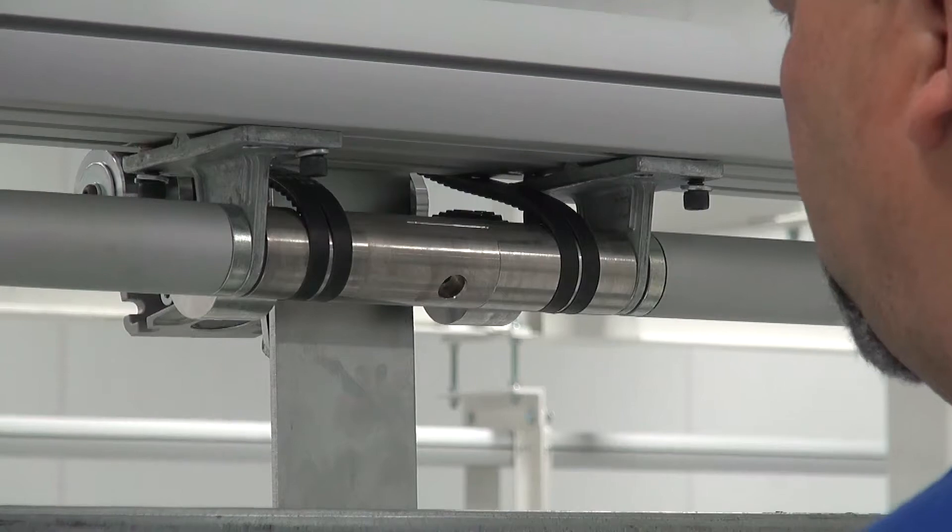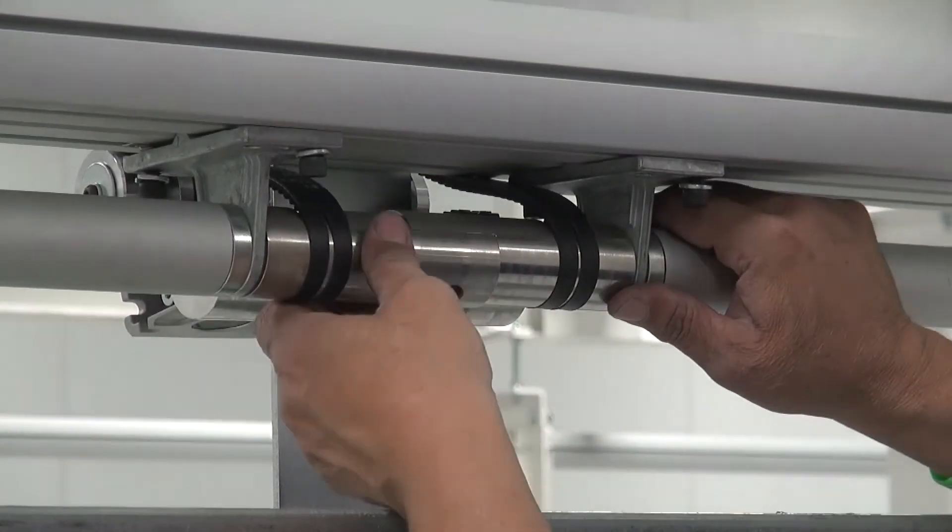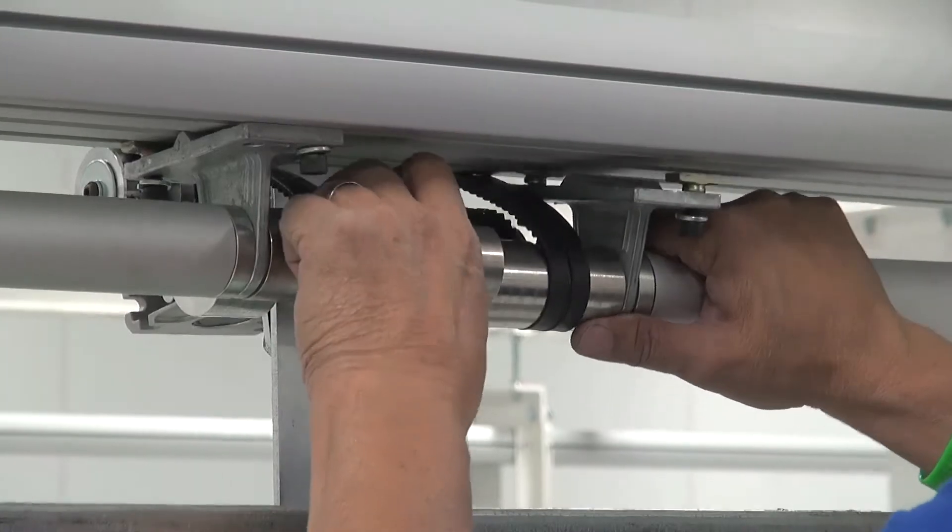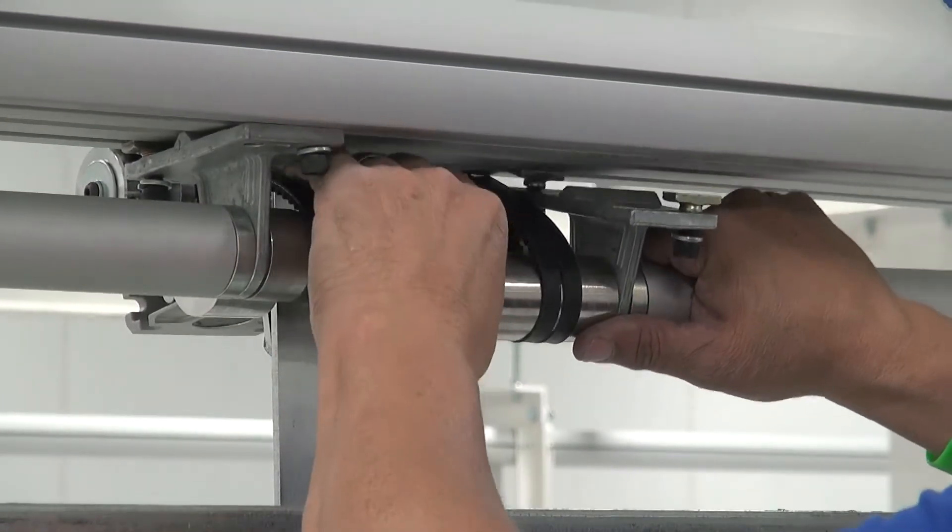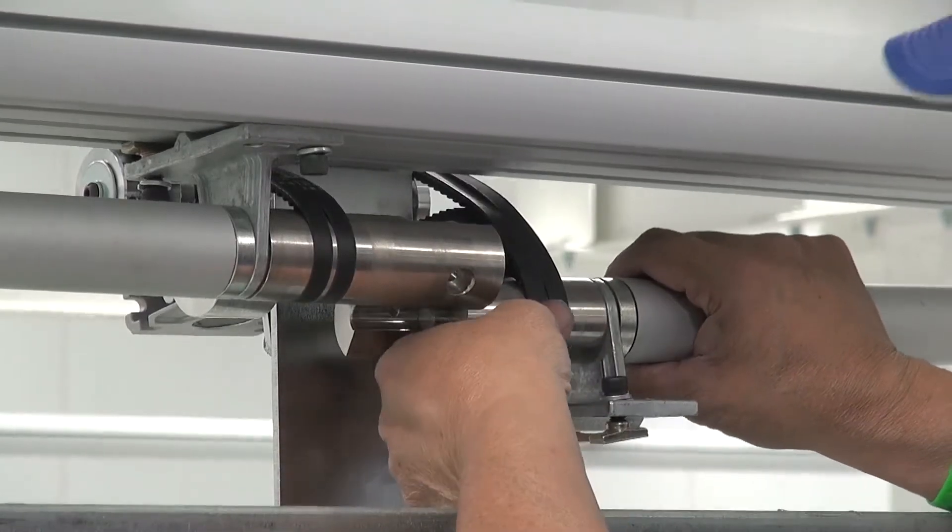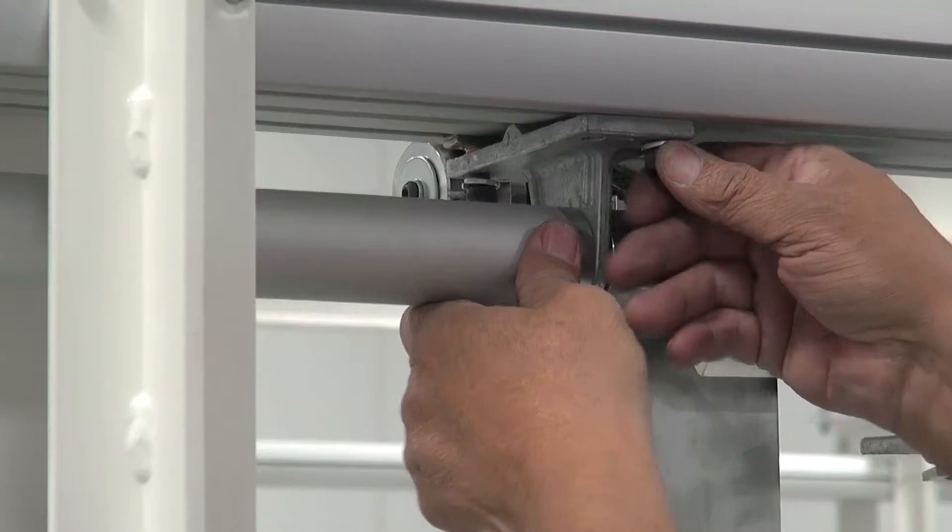Once the portable shaft bearing units are loose then you have enough room to actually separate the portable shafts and drop this one.